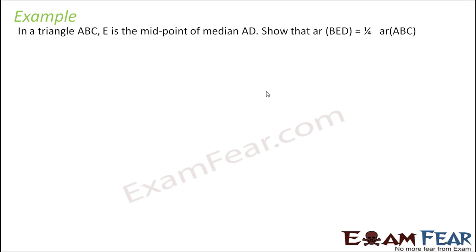Let's check this next problem. In triangle ABC, E is the midpoint of the median AD. We have to show that area of triangle BED is equal to one-fourth of area of triangle ABC.